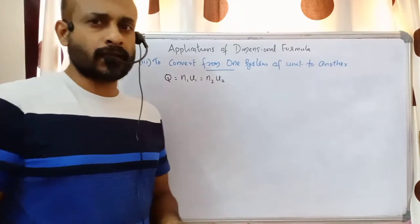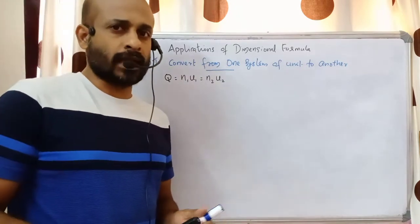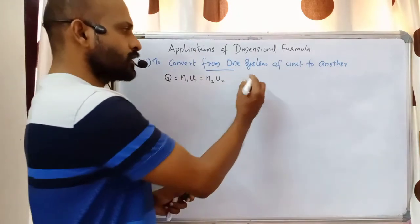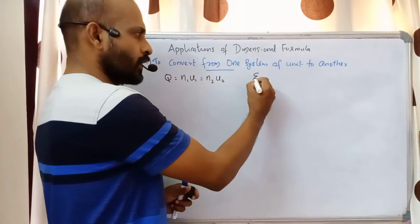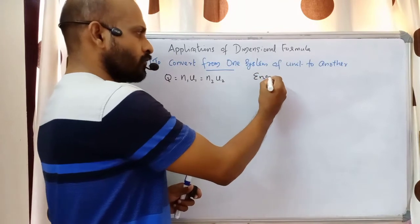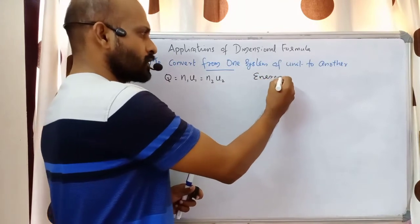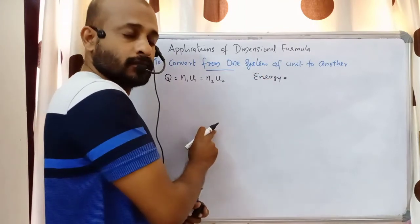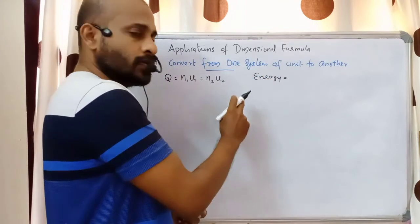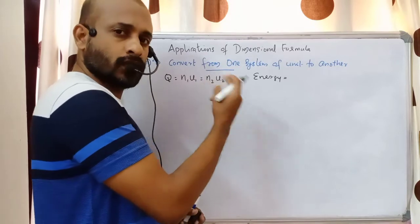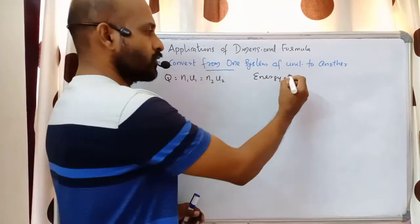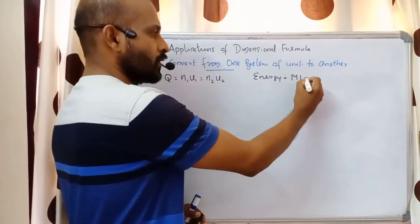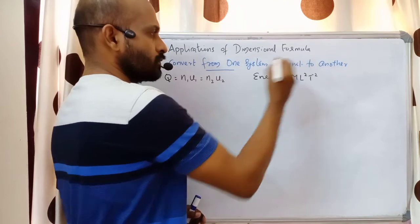For simplicity we will take the example of energy. Energy is a physical quantity; first we will know what is the dimension formula of energy. Energy, work — all these have the same dimension formula, that is ML squared T raised to minus two.